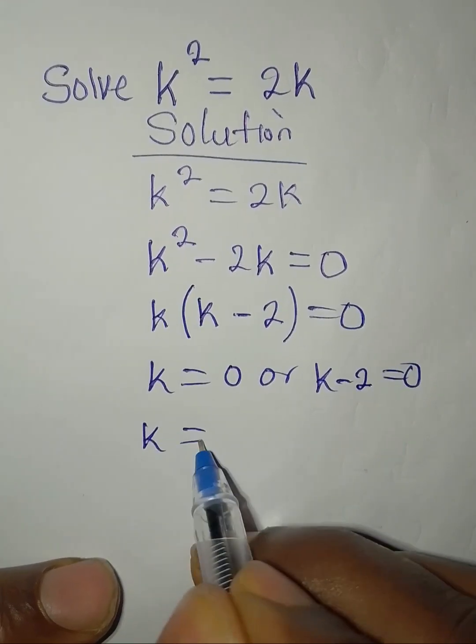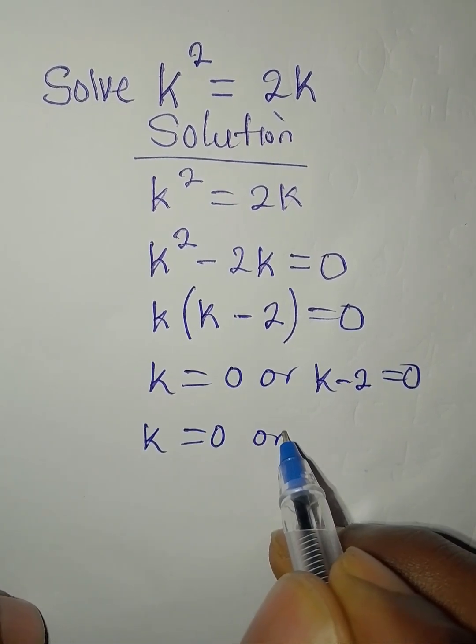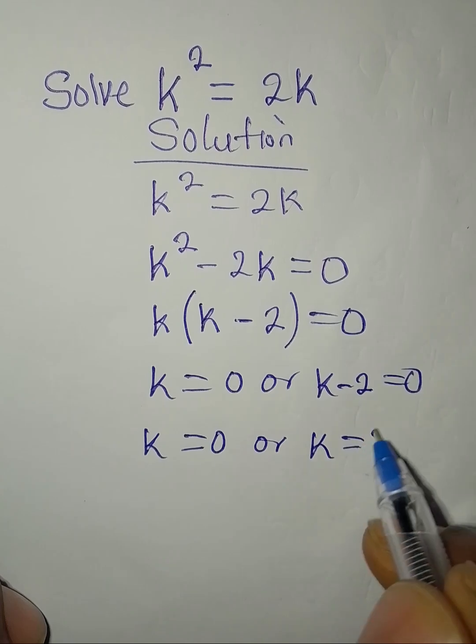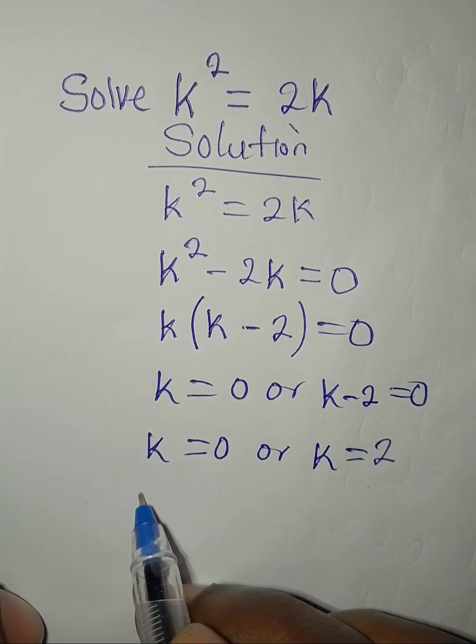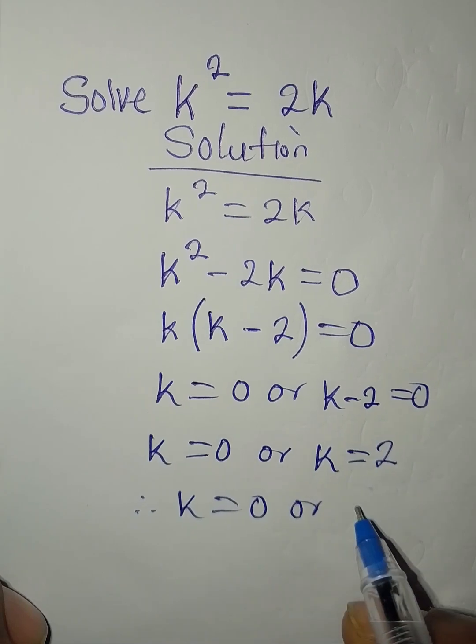Our k already remains zero. And then on the other side, our k will be zero plus two, and that is two. Therefore k = 0 or 2.